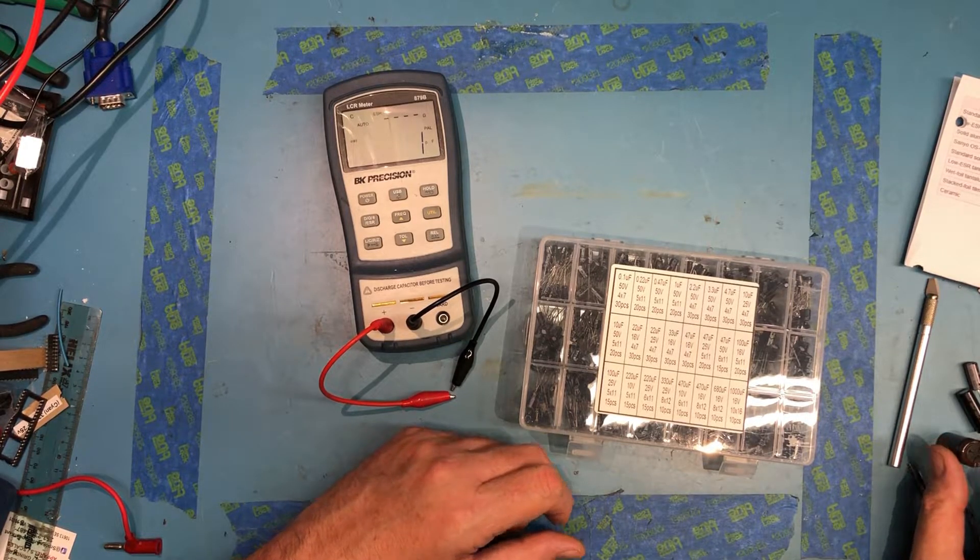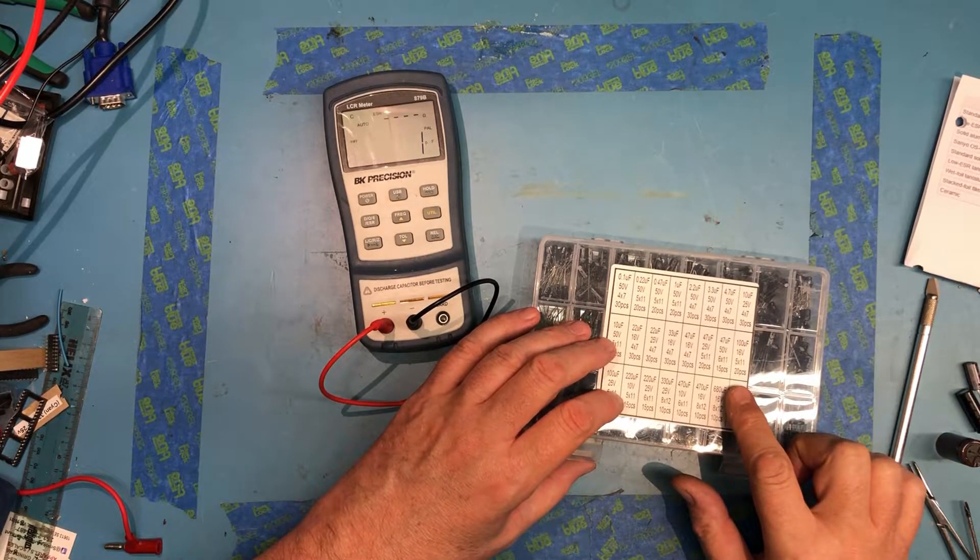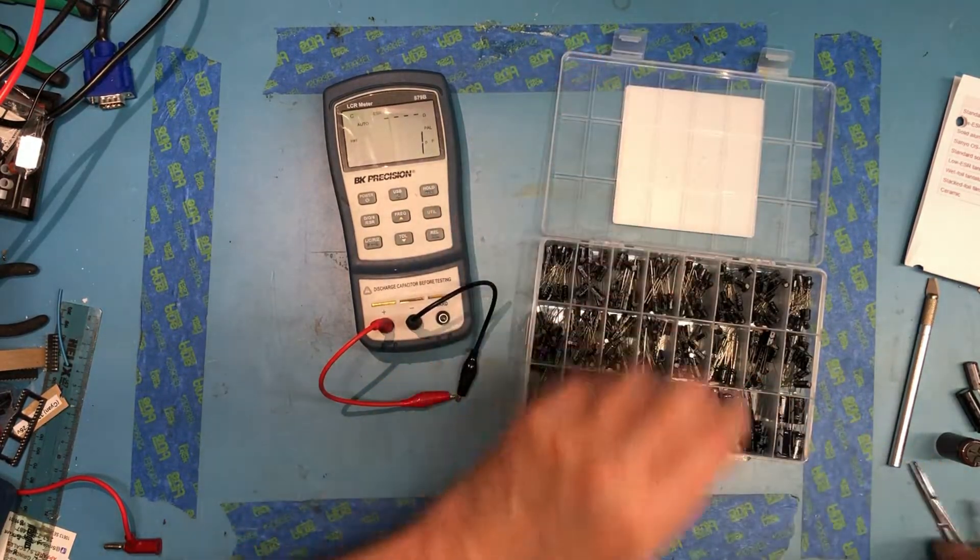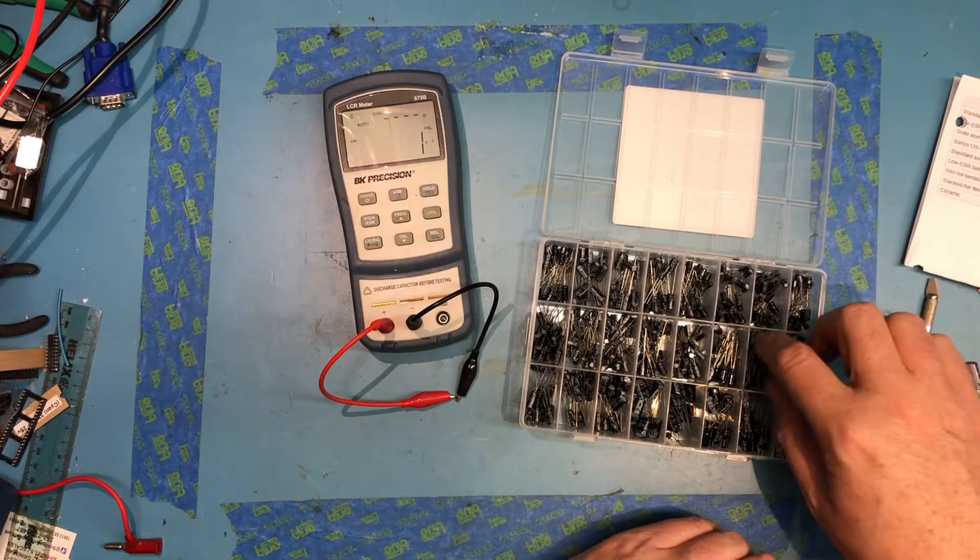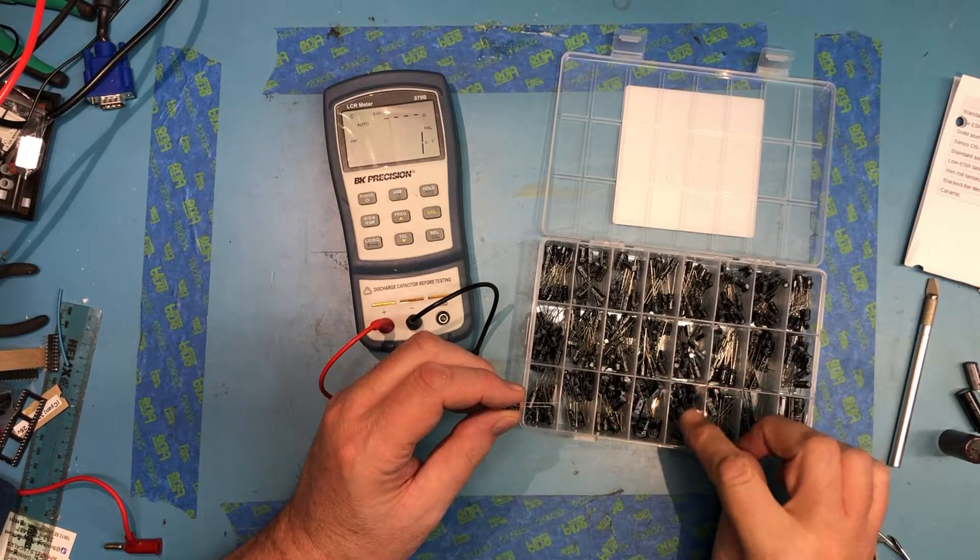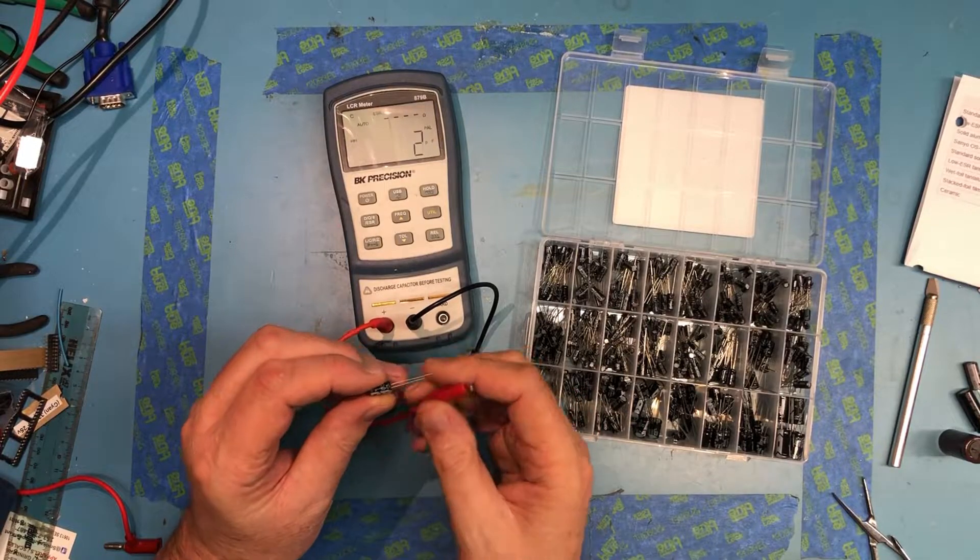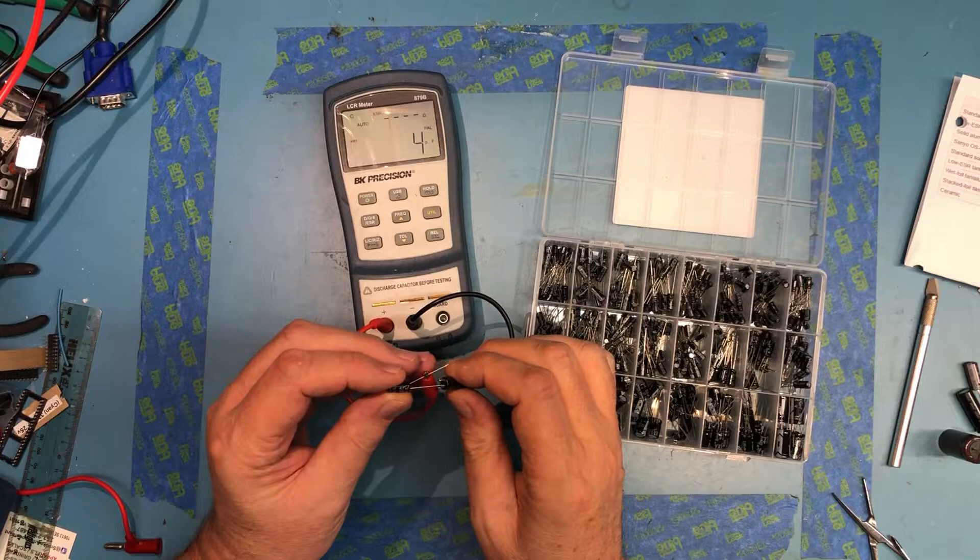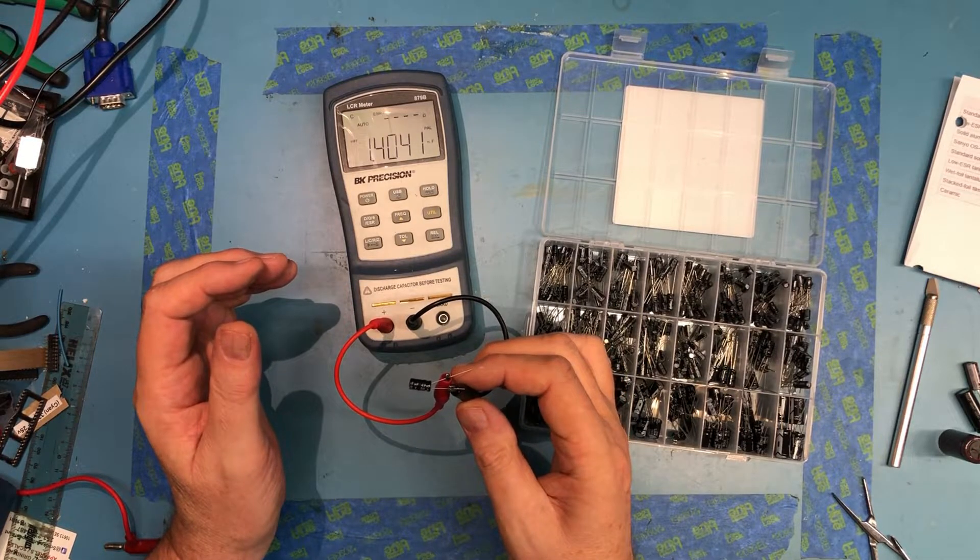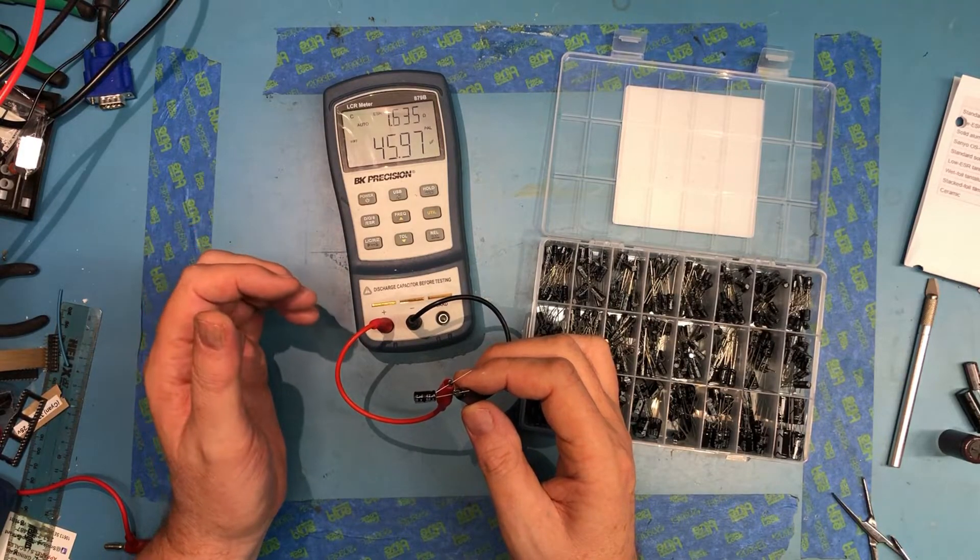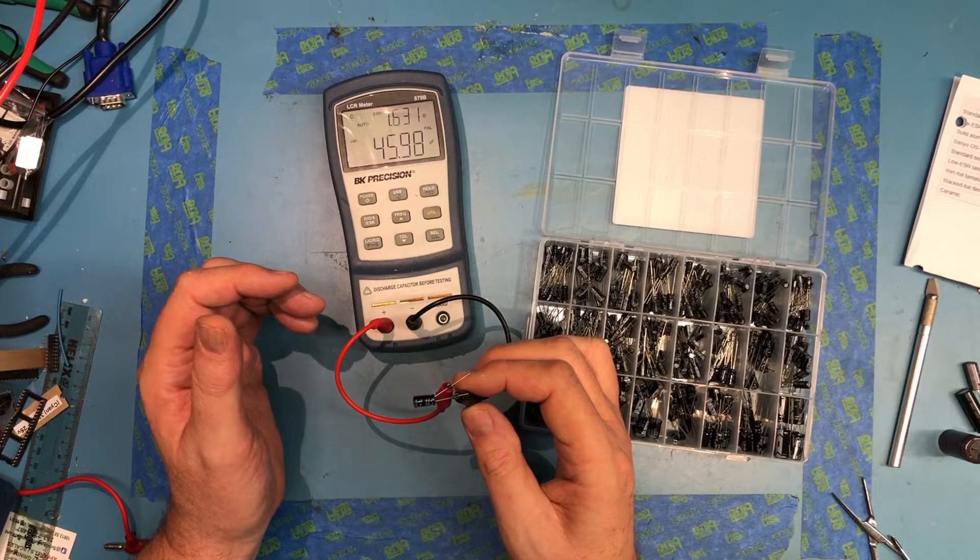The capacitor I actually bought this for is, I think, it's going to be in these 47 ohm guys here. I don't remember the exact one I need to replace. You know, 45.9, 1.6 ohm. Very reasonable.